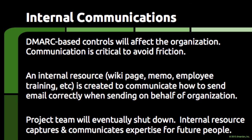During the execution of this three-step loop, the project team develops internal resources to communicate the upcoming installation of DMARC-based controls. This communication can be as simple as an internal wiki page that explains the controls, or as complicated as a series of contractual reviews requiring partners to comply with the organization's email sending standards. A key reason for developing this internal resource is to allow the project team to leave behind materials that will educate future employees about the existing DMARC-based controls.